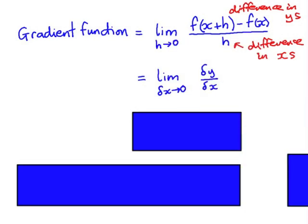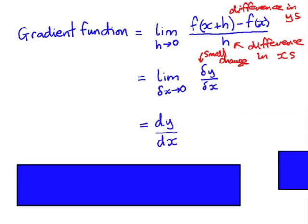This can be written as the limit as delta x tends to zero of delta y over delta x. Delta means small change, so it's the small change in y divided by the small change in x as that small change in x tends to zero. And this is written as dy by dx, the limit as the small change in x tends to zero of difference in y's over difference in x's.